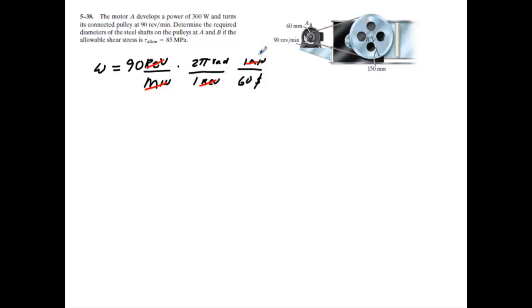And we'll go ahead and run that value right there. Let's see what we're going to get there. So it's 180π divided by 60. That gives me a value of 3π radians per second. And again, that is only for shaft A.